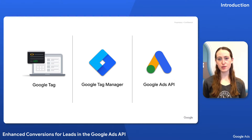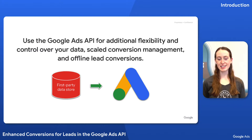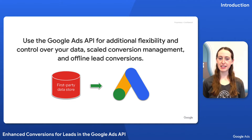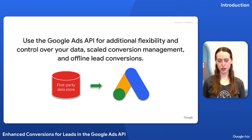If you're already using the Google Tag or Google Tag Manager for conversion tracking, you can set up Enhanced Conversions for Leads with only slight changes to your configuration. Using the Google Ads API provides additional flexibility and control over your data and the ability to efficiently manage your conversions at scale. Plus, it allows you to upload conversions for which there is no web-based event when the lead converts.